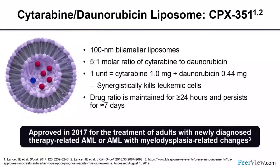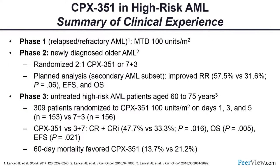We have multiple FLT3 inhibitors now available. One is approved frontline — midostaurin — and two others are approved in the salvage setting: gilteritinib in the United States, and quizartinib which was recently approved in Japan. We have a rapid molecular panel that gives us 10 actionable genes — FLT3, NPM1, IDH1, IDH2, TP53, CEBPA, RAS, and others — within 72 hours. The full 81-gene research panel gives additional information retrospectively. Most academic centers have about a three-to-five-day turnaround; Germany achieves this within 48 hours nationwide through centralized labs.